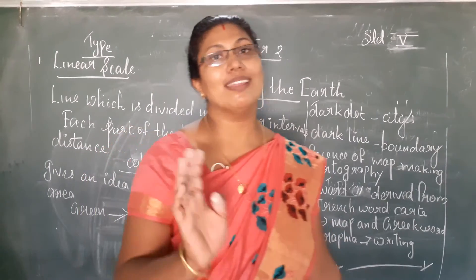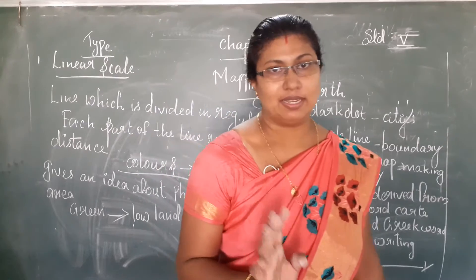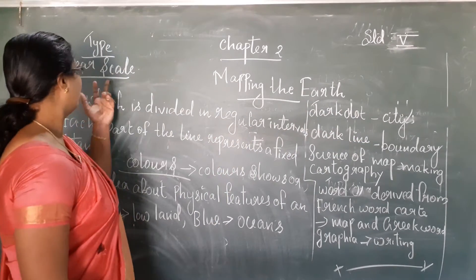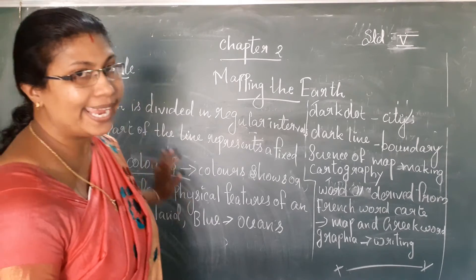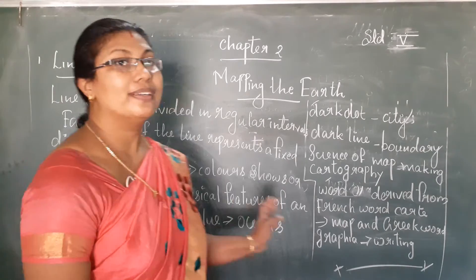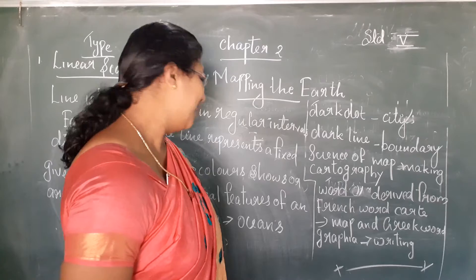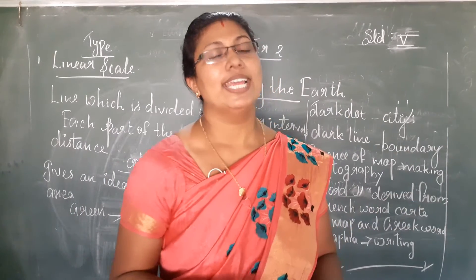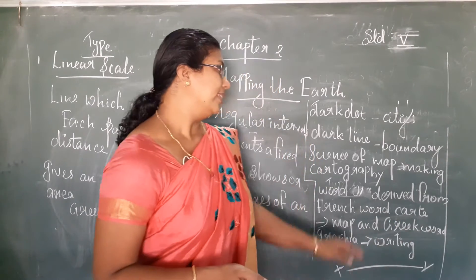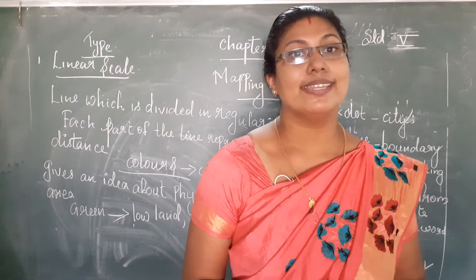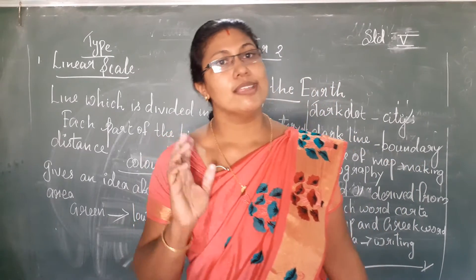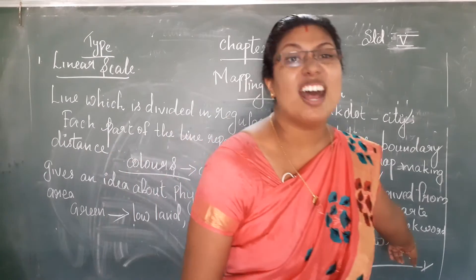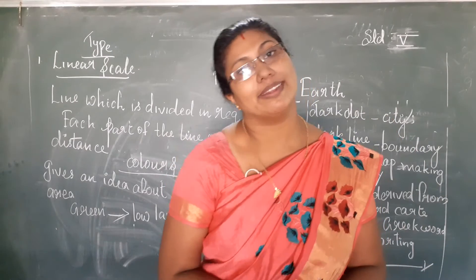So today we discussed: what is a scale, the different types of scale — in the form of a statement, and the linear scale. Then we dealt with colors: green color indicates low land, blue color indicates oceans, dark dots indicate city, dark lines indicate boundary. Then we dealt with cartography — the science of map making — derived from the French word 'carte' meaning map, and the Greek word 'graphia' meaning writing.